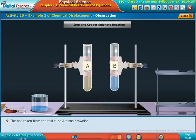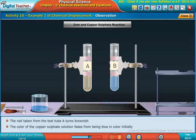The nail taken from the test tube A turns brownish. The color of the copper sulfate solution fades from being blue in color initially.